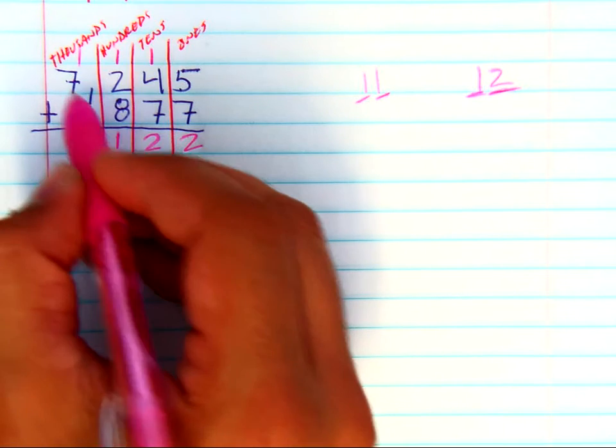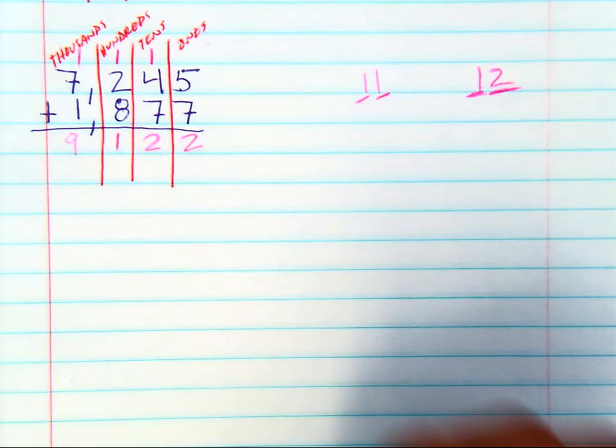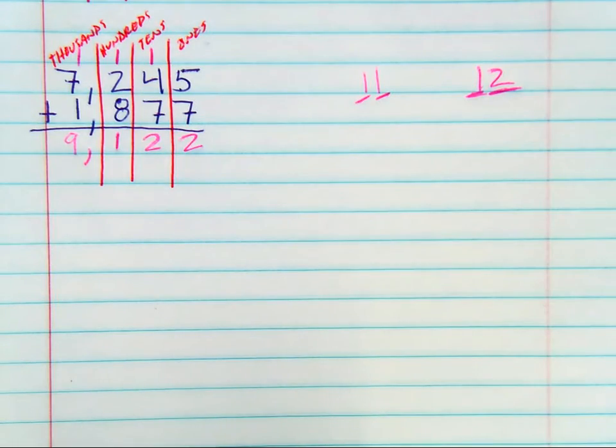And 7 plus 1 is 8, plus 1 is 9,000. And your answer is 9,122.